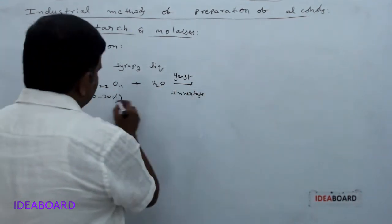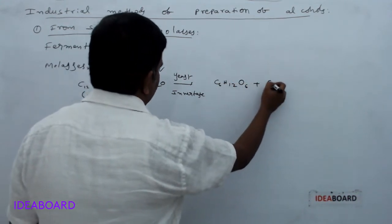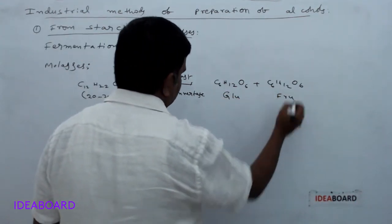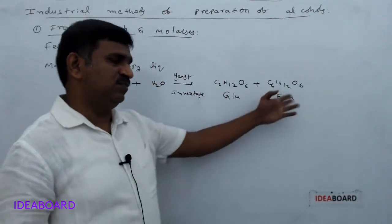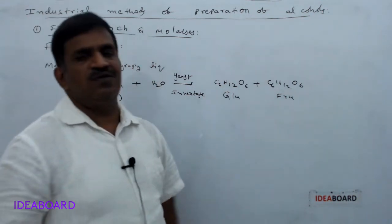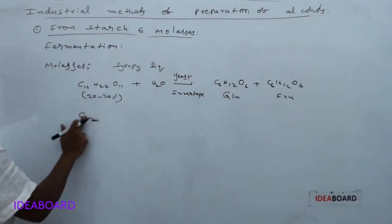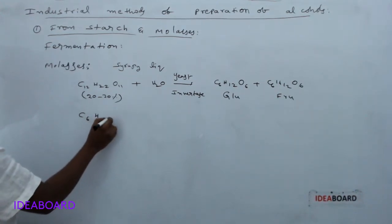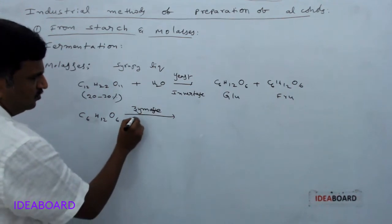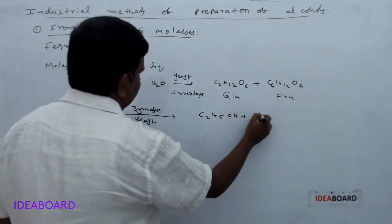The invertase enzyme converts the sucrose or molasses solution into C₆H₁₂O₆ plus C₆H₁₂O₆ — glucose and fructose. Both have the same formula but differ in structure and functional groups. In the next step, glucose or fructose (C₆H₁₂O₆) is taken, and the enzyme zymase, present in yeast, converts it into C₂H₅OH and CO₂.